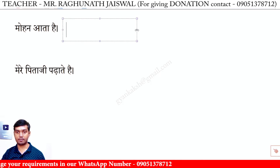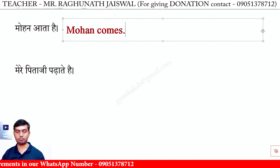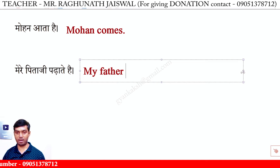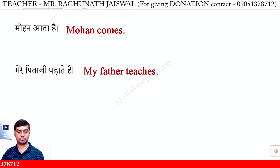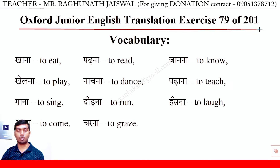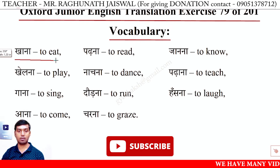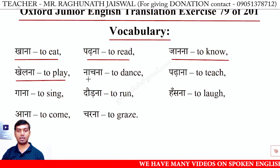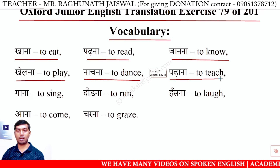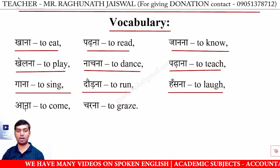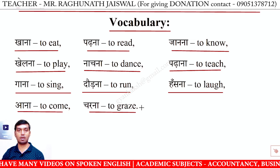मोहन आता है — Mohan comes. मेरे पिताजी पढ़ाते हैं — My father teaches. ठीक है। अब कुछ vocabulary लिखेंगे — Oxford Junior English Translation Exercise 79 of 201 Vocabulary: खाना — to eat, पढ़ना — to read, जानना — to know, खेलना — to play, नाचना — to dance, पढ़ाना — to teach, गाना — to sing, दौड़ना — to run, हँसना — to laugh, आना — to come, चरना — to graze.